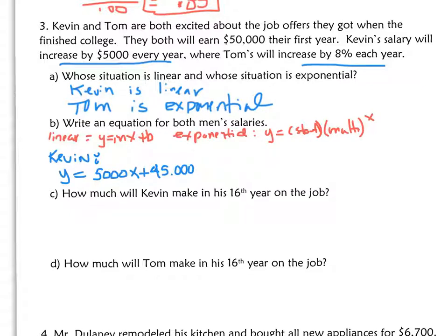And the same holds true for Tom. Tom is exponential, and we have to go back one year from $50,000. We already know that at 8%, he is 100 plus 8 divided by 100, which is 1.08.